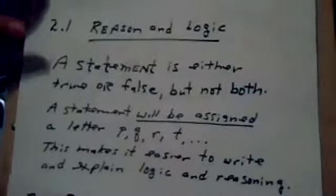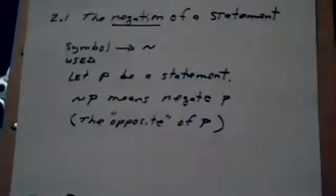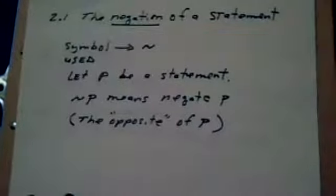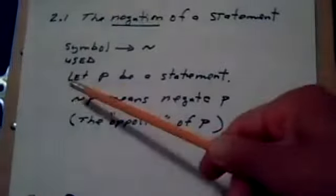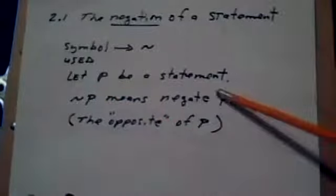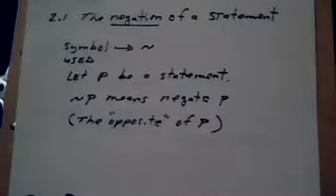We start with one of the connectives: the negation of a statement. This is a symbol—it's like a sleepy nest. If we let p be the statement, then the negation of p means negate p. That means deny it, or the opposite of p.